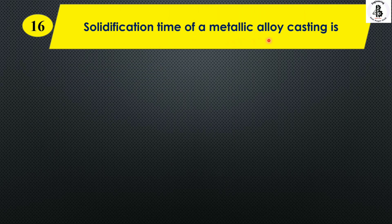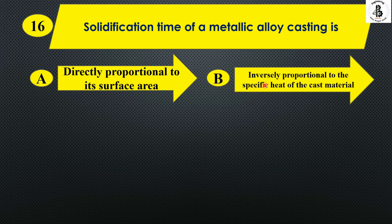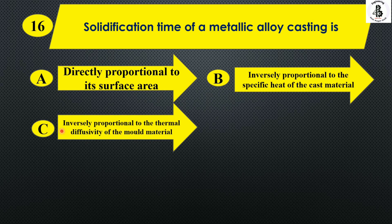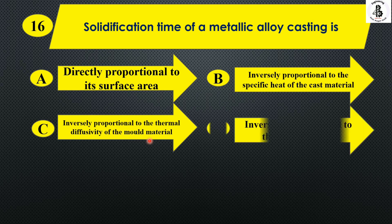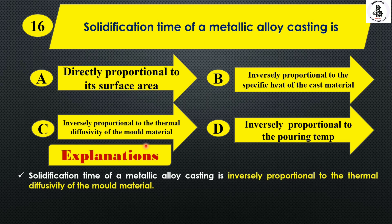Solidification time of a metallic alloy casting is: Option A directly proportional to its surface area; Option B inversely proportional to the specific heat of the cast material; Option C inversely proportional to the thermal diffusivity of the mold material. The solidification time for a metallic alloy casting is inversely proportional to the thermal diffusivity of the mold material. The right answer is Option C.